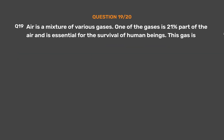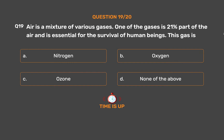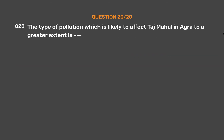Question number 19: Air is a mixture of various gases. One of the gases is 21% part of the air and is essential for the survival of human beings. This gas is — Option A: Nitrogen. Option B: Oxygen. Option C: Ozone. Option D: None of the above. The correct answer is Option B: Oxygen. Oxygen is a colorless, odorless reactive gas — the chemical element of atomic number 8 and the life-supporting component of the air. Oxygen is a very important element because we need it to live.